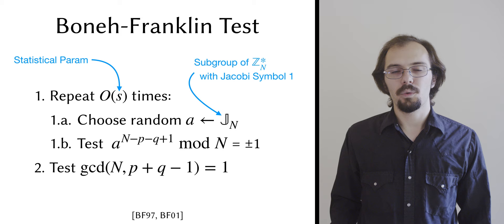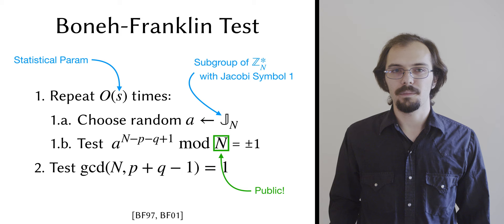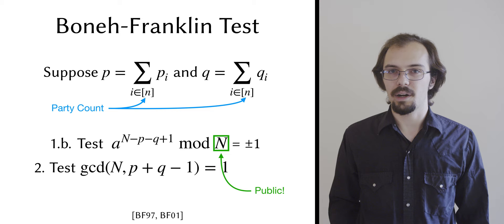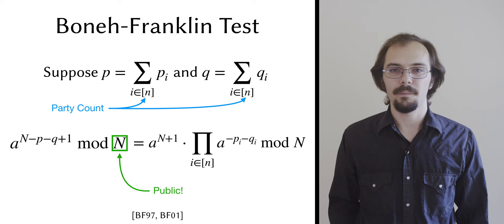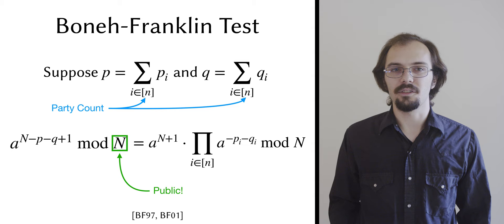The key here is that the modulus n is the public output of the protocol. This means that we can cut the factors p and q into integer shares, one share of each for every party, and then rewrite the test as the product of terms that the parties can compute locally. An integer sharing in this case is simply a set of randomly chosen positive integers that add up to the shared value.